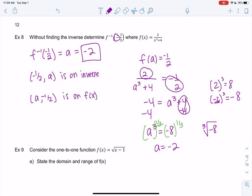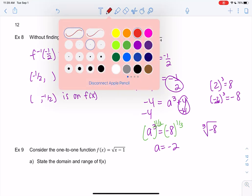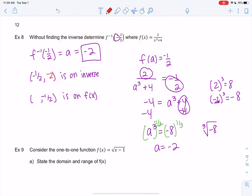We'll have (-1/2, -2) on the inverse and (-2, -1/2) on the original. We used the regular function to find the x value, and we didn't have to go through all the trouble of finding the inverse.